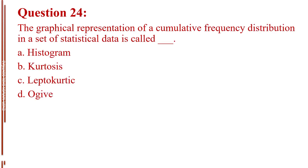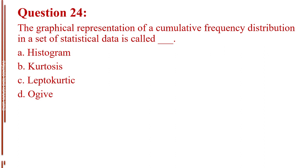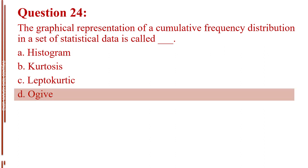Question number 24. The graphical representation of a cumulative frequency distribution in a set of statistical data is called blank. Letter A, histogram. Letter B, kurtosis. Letter C, leptokurtic. Letter D, ogive. The answer is Letter D, ogive.